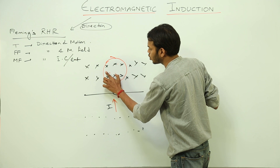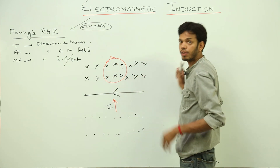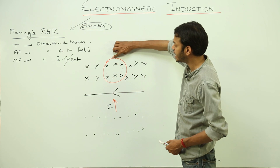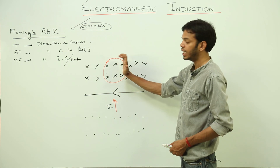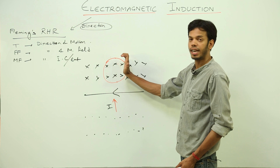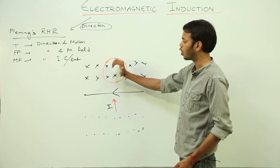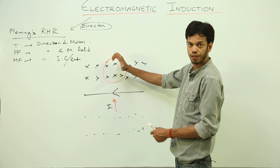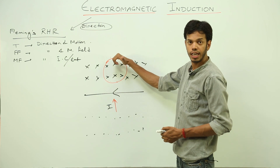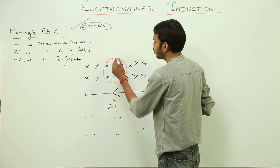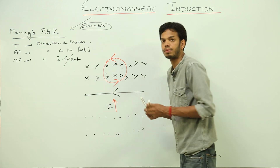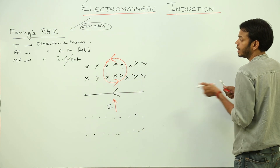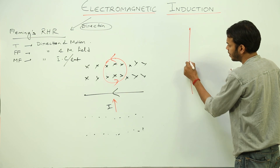The induced current must oppose the increasing number of crosses, so it will create dots. The only way the induced current can create dots is by flowing in the anti-clockwise direction. So the induced current flows in the anti-clockwise direction. That is how you apply Lenz's law.